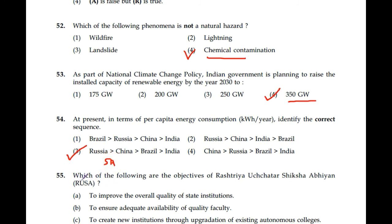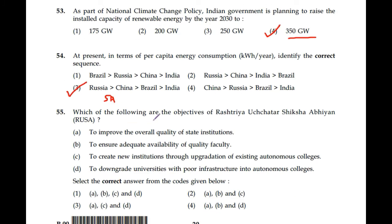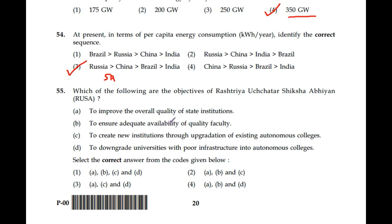Question number 55: Which of the following are the objectives of Rashtriya Uchchatar Shiksha Abhiyan (RUSA)? To improve the overall quality of state institutions — correct. To ensure adequate availability of quality faculty — correct. To create new institutions through upgradation of existing autonomous colleges — correct. To downgrade universities with poor infrastructure into autonomous colleges — this is not correct. So A, B and C are correct; option 2 is the answer.